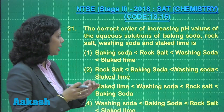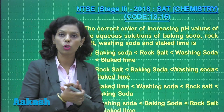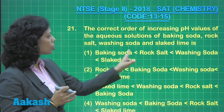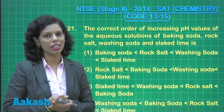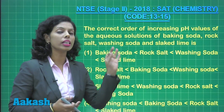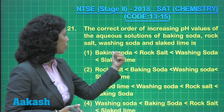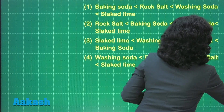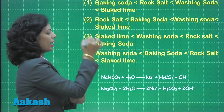We have two salts — baking soda and washing soda — whose hydrolysis we need to consider first. Rock salt is NaCl and it does not undergo hydrolysis, so it is a neutral salt with a pH value of 7.